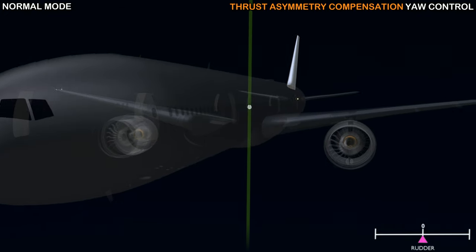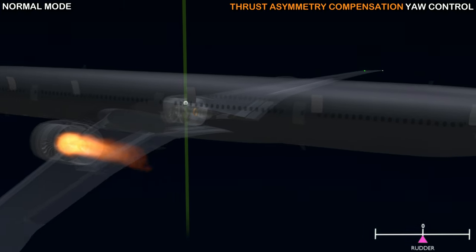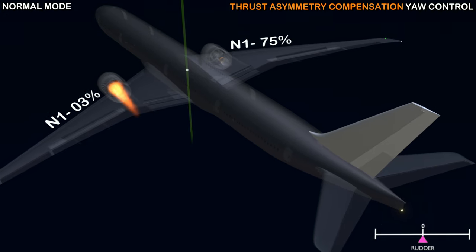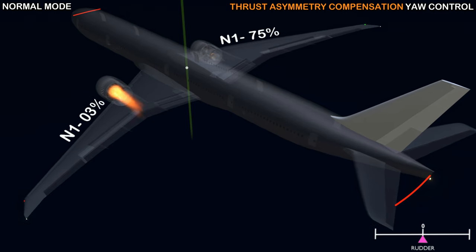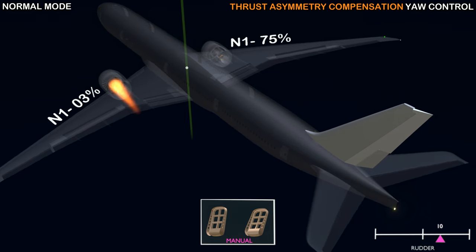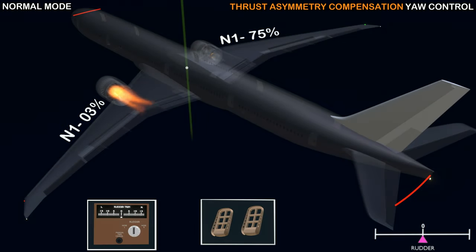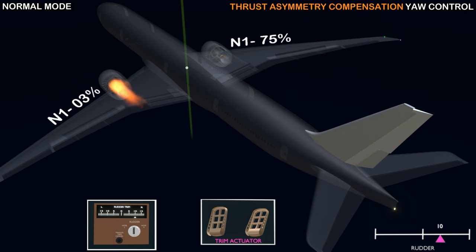Thrust asymmetry compensation. If the aircraft suffers an engine failure, it creates an asymmetric thrust condition. The thrust of the two engines is not equal and this causes the aircraft to veer towards the failed engine side. To keep the aircraft flying straight, the asymmetric thrust has to be compensated by deflecting the rudder to the right. The rudder can be deflected manually, but constant rudder pedal force must be maintained, which will significantly add to the pilot workload. The aircraft has the rudder trim system for long-term rudder deflection. The trim actuator moves the rudder pedal and holds the position. By selecting the trim system, pilots can avoid the application of unwanted rudder pedal force and reduce their workload.